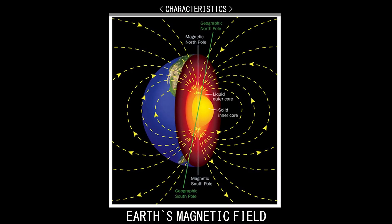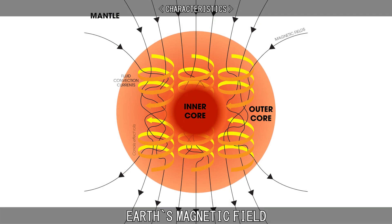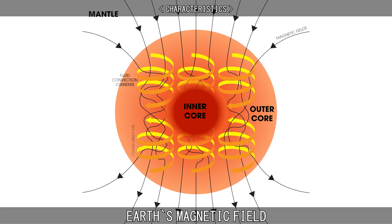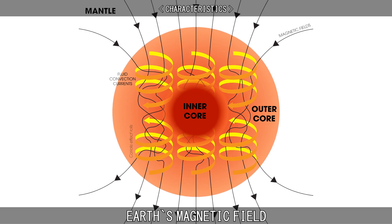Essentially, a magnetic field is caused by a rotating electric current. On Earth, these electric currents are caused by the convective motion of molten iron and nickel in the Earth's outer core.